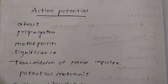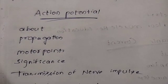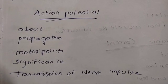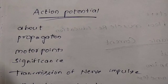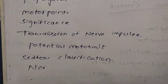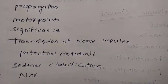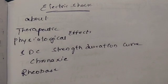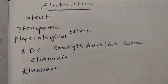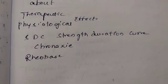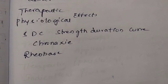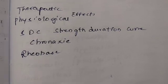Action potential definition is very important — including propagation, motor points, and significance. Transmission of nerve impulse, action potential, motor unit, NCV (nerve conduction velocity), and sedation classification are key topics. Also, electric shock definition and its effects, and the strength-duration curve is very important.